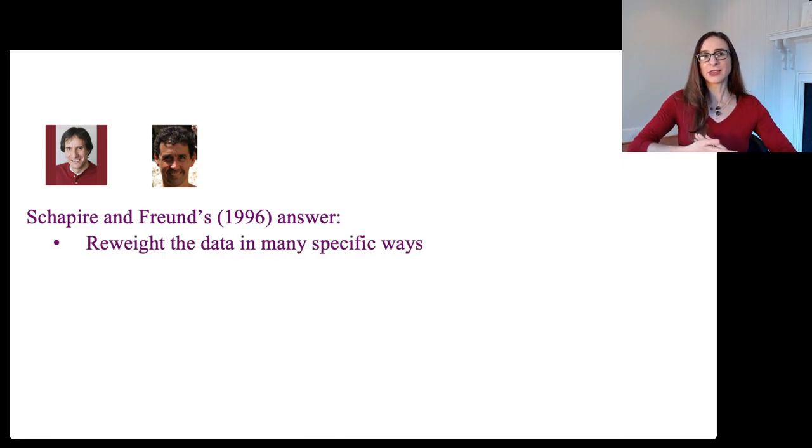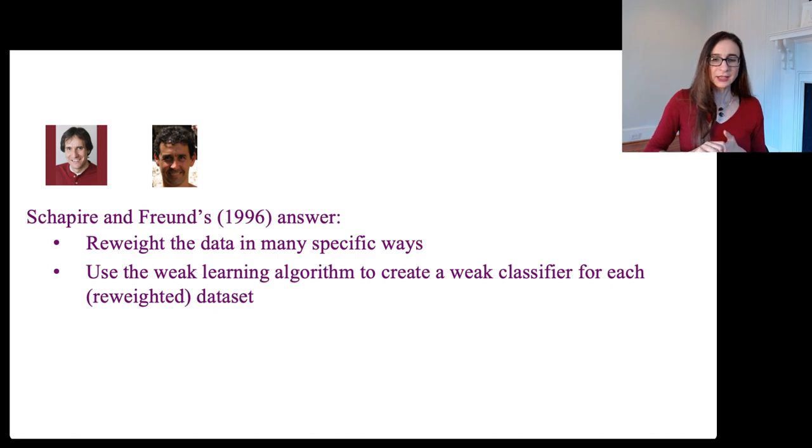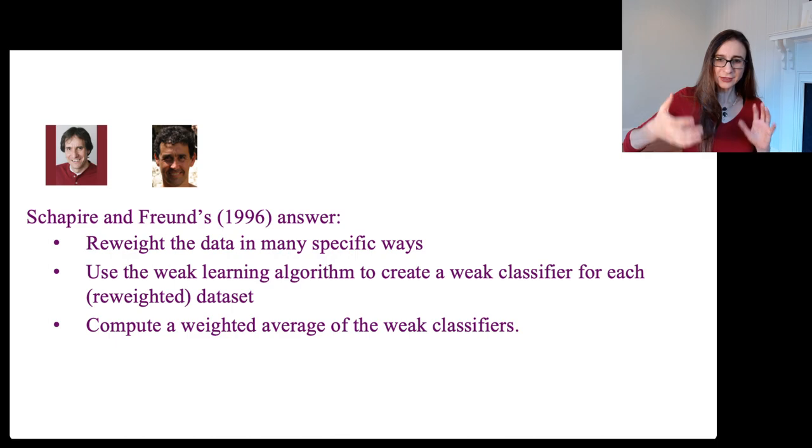So they figured out that you could reweight the data in different ways. Each time you reweight the data, you run the weak learning algorithm to give you a weak classifier for each reweighted data set. And then you could take those weak classifiers and combine them to produce a weighted average that was actually a nice strong classifier. This is a boosted model here.